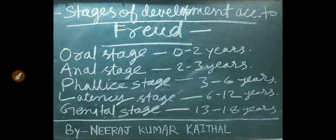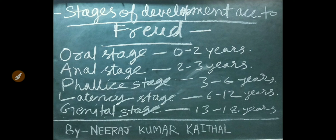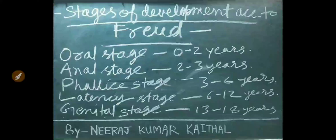Stages of psychosexual development according to Freud: Oral stage — 0 to 2 years; Anal stage — 2 to 3 years; Phallic stage — 3 to 6 years; Latency stage — 6 to 12 years; Genital stage — 13 to 18 years.